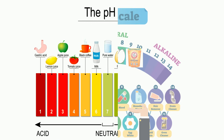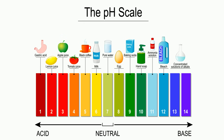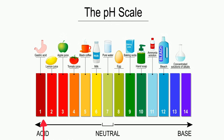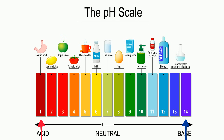The pH scale has colors that go along with acids and bases. Acids are yellow, then change to orange, then to red. And bases are green, then to blue, and almost purple. Remember, B for base and blue.